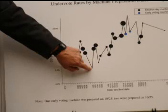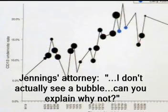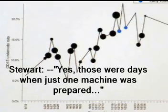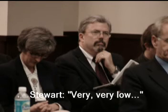In the bottom left-hand area, I don't actually see a bubble. Can you explain why not? Yes, those are days when just one machine was prepared. What sort of under-vote rates did the machines prepared on those days show? Generally very, very low under-vote rates compared to all of the other machines.